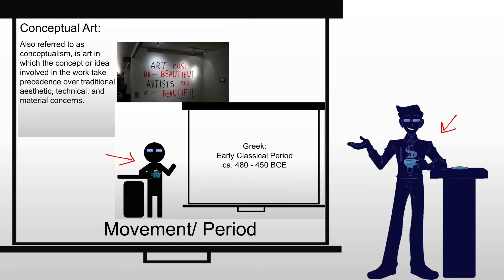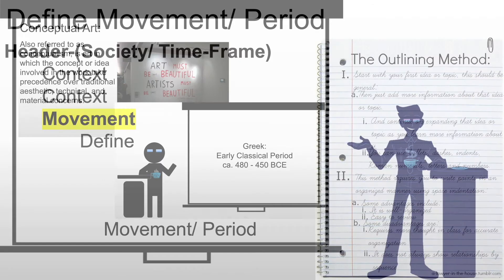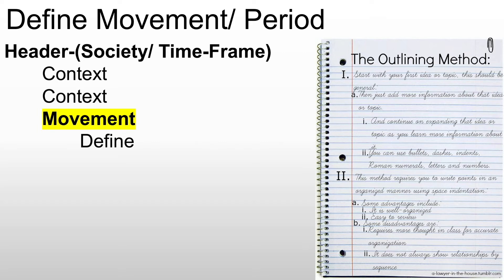Now with the movement, one of the most important things you're going to do with that movement or period of time is define it. With a movement I will probably tell you exactly when it happens and then I will give you a rough definition of it. With a period I will tell you when it happens and I will give you rough characteristics of that period.